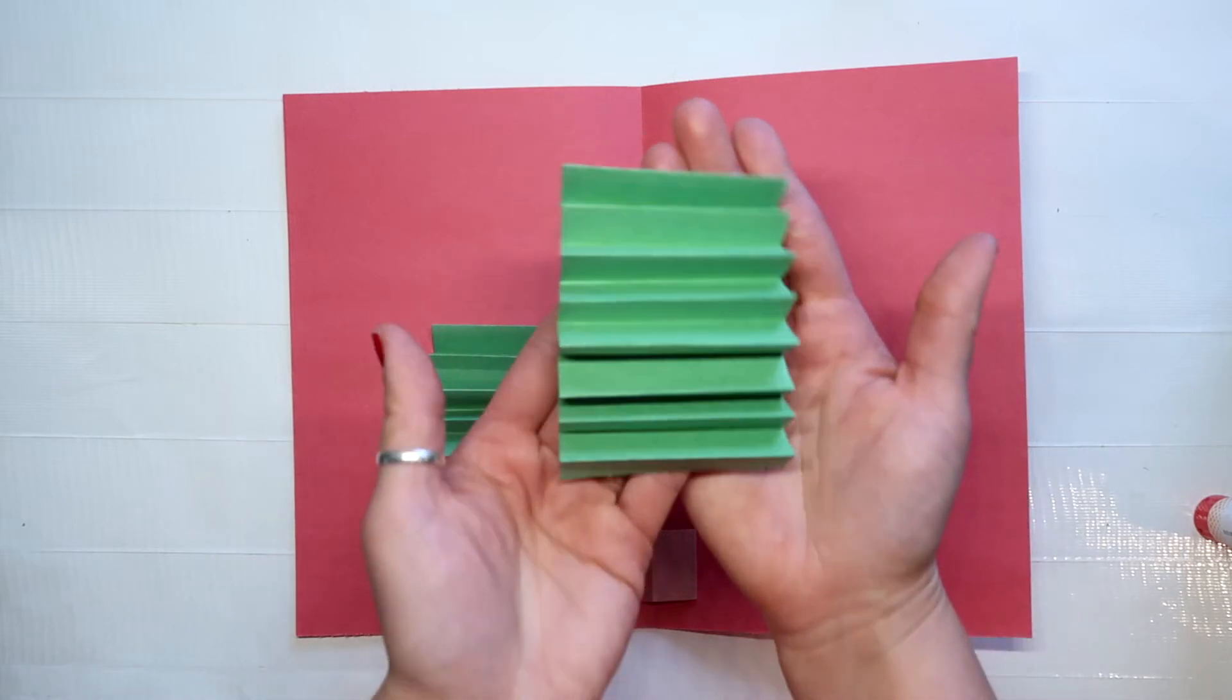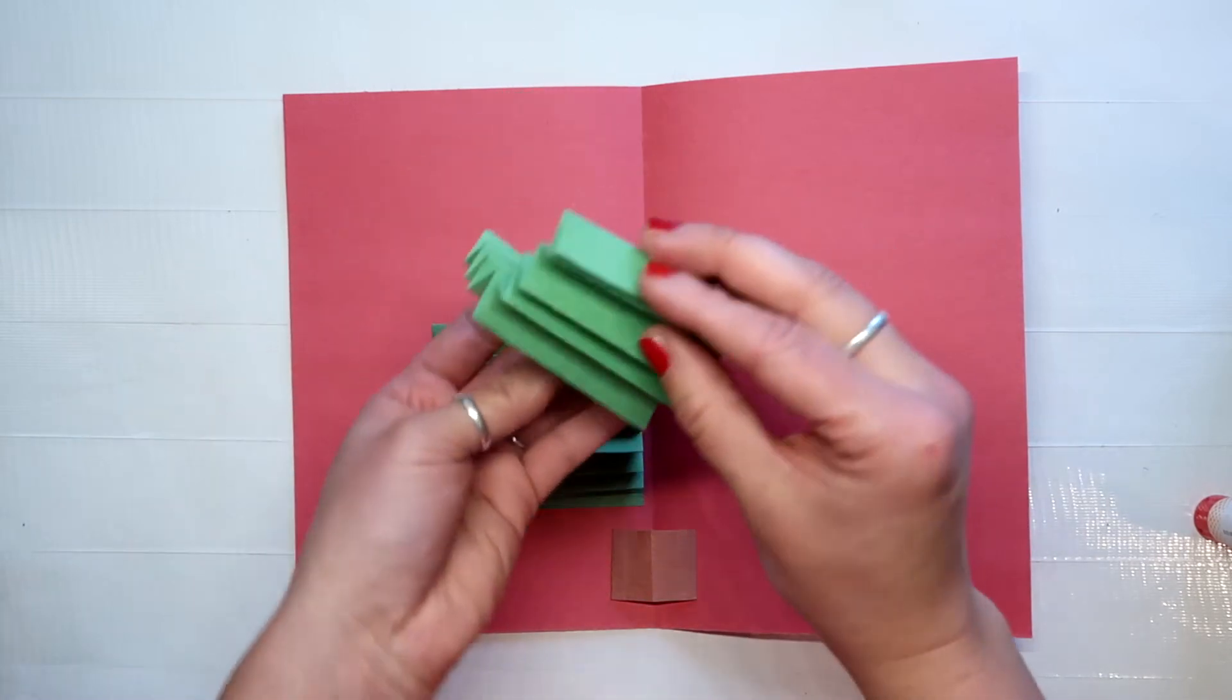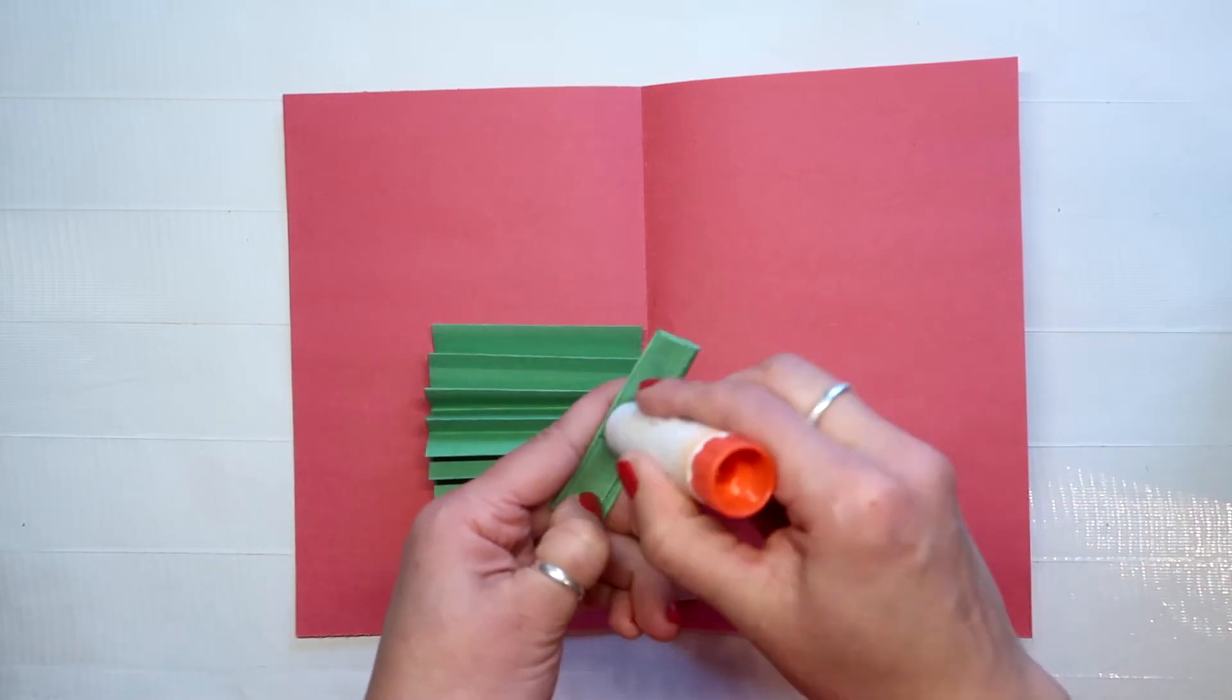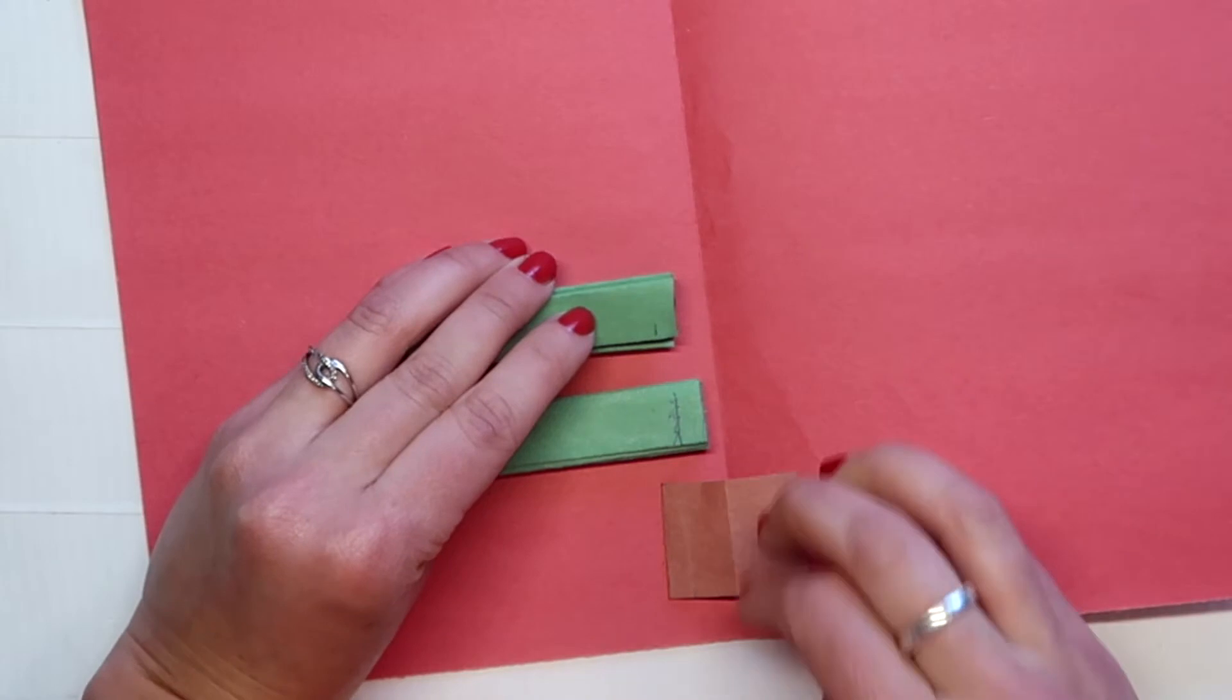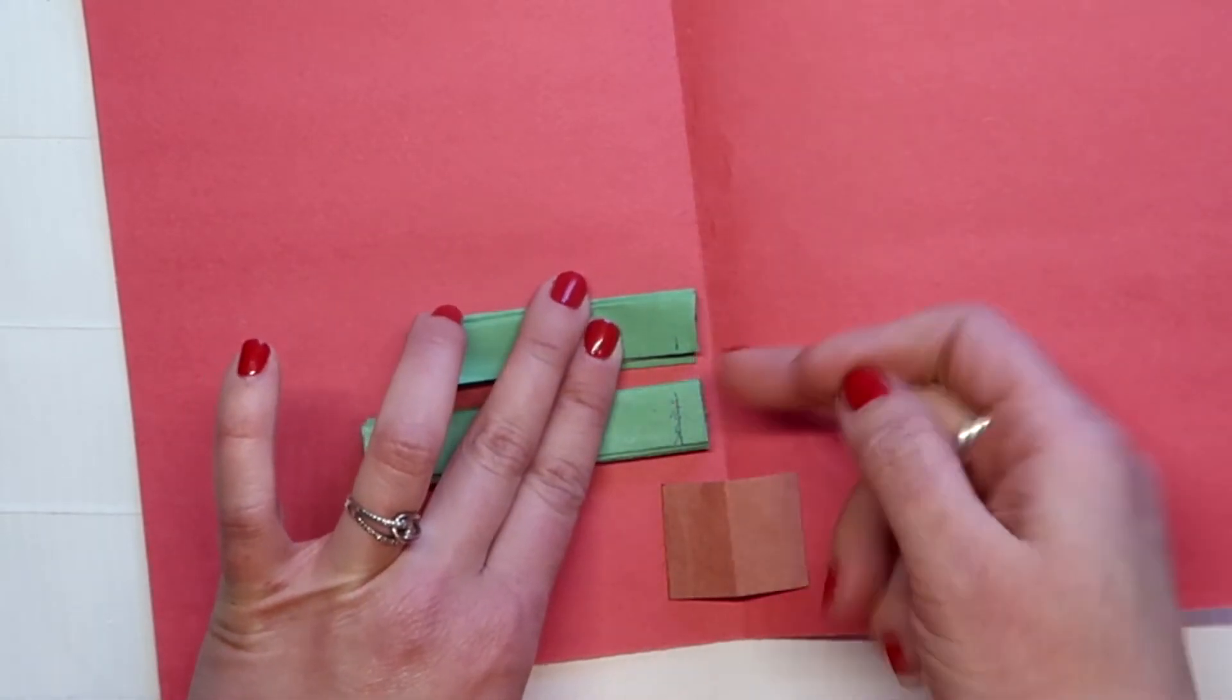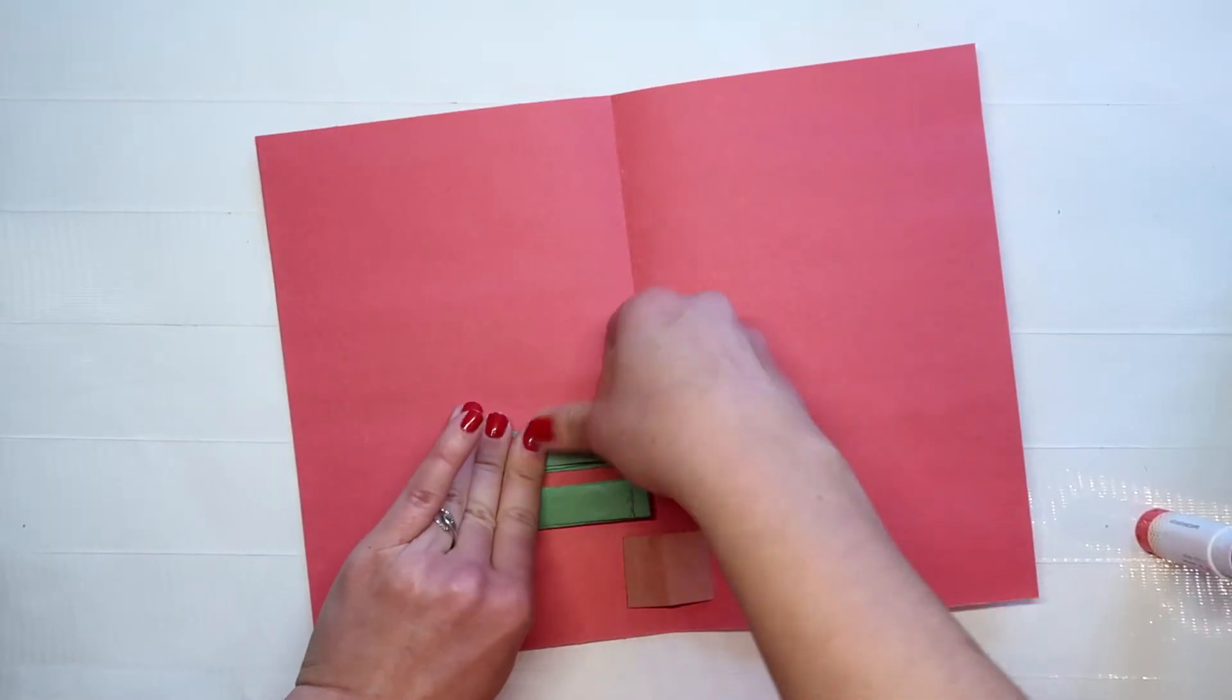So now we're going to take the next one and we're going to do the same thing. Make sure it's again facing this way, not this way. And we're going to glue that. So we're just trying to keep the same gap as you go along and leave a little gap off the side. Push that down.